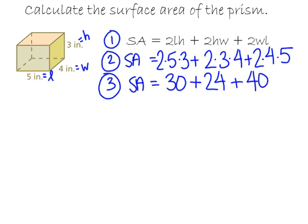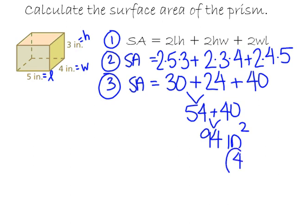Now I can continue. 30 + 24 is 54, and 54 + 40 is 94. Then on 94, I need units of inches squared, and that is step four. So surface area equals 94 inches squared.